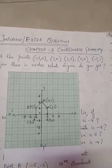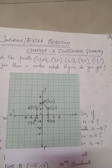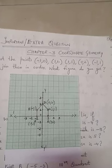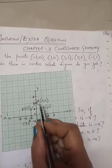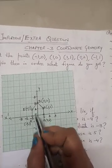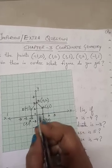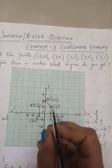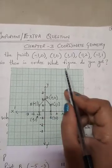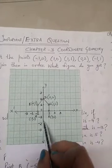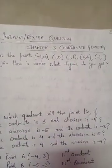When you join A, B, C, D, E, the figure you get is a pentagon — ABCDE. It is not a regular pentagon because all its sides are not equal. So the figure you get is a pentagon. Now come to question number 2.